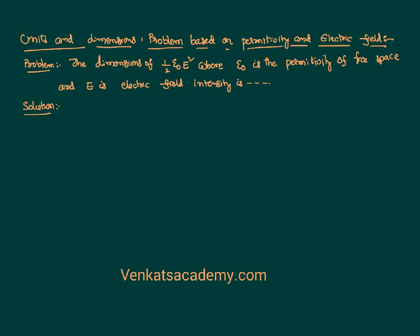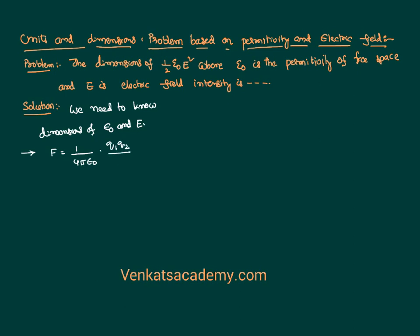To solve this problem, first I need to know the dimensions of epsilon naught and electric field intensity. Let us start with epsilon naught, the permittivity of free space, which appears in Coulomb's inverse square law. According to Coulomb's law, the force between two charges is F = (1/4π epsilon naught) × q1 q2 / r squared. So I need to find the dimensional formula of epsilon naught.